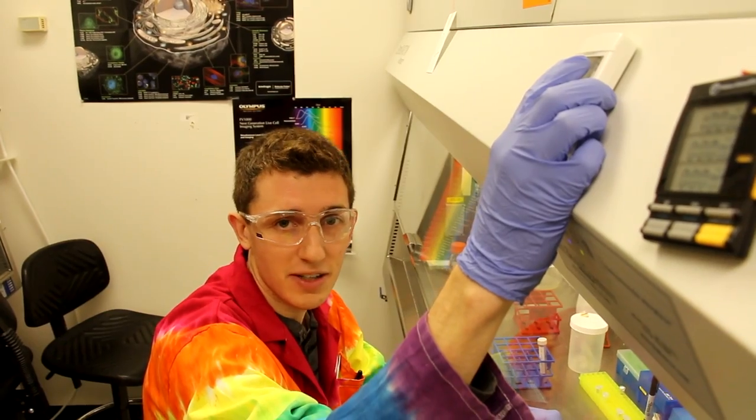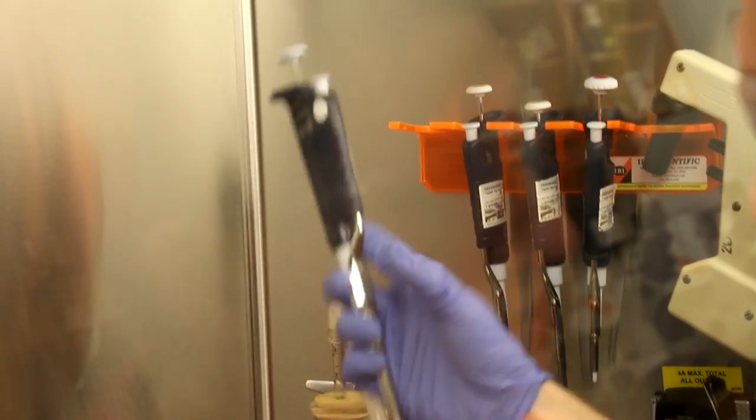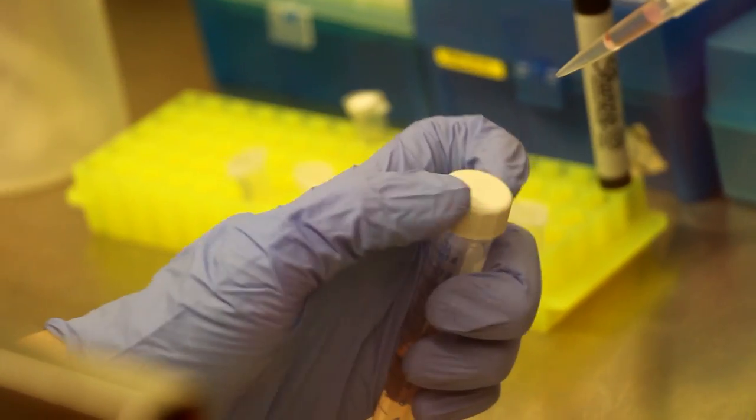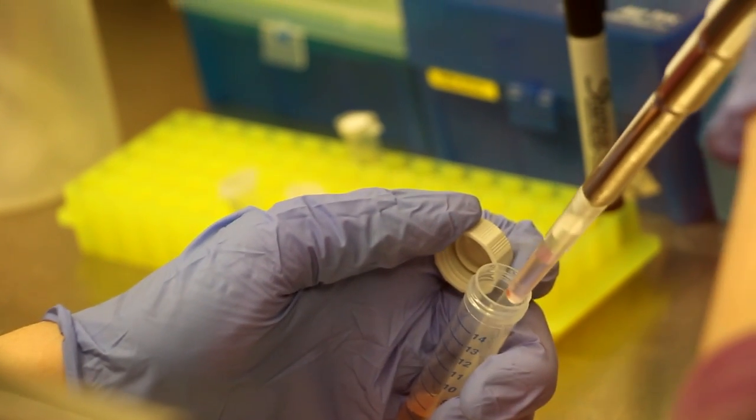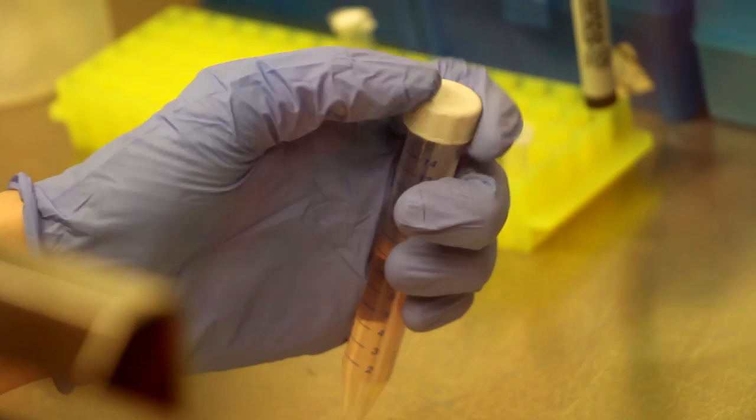At the end of your 5-minute incubation, you will then use a P1000 to transfer the entirety of your transfection reaction into your remaining growth media. Gently invert the tube about 5 times to mix the transfection reaction with your growth media.